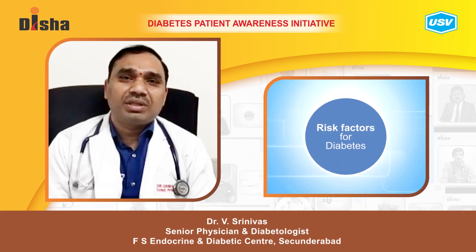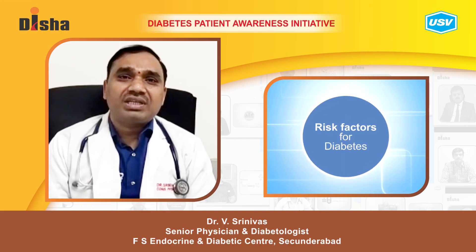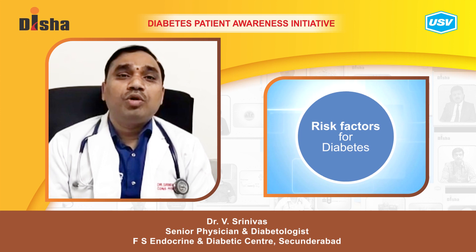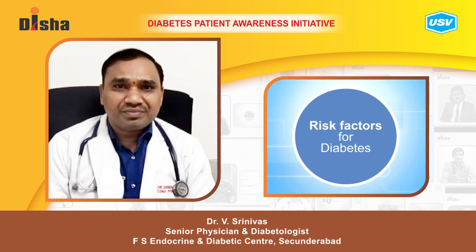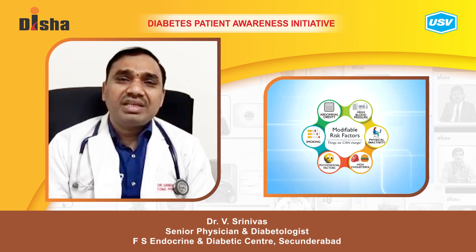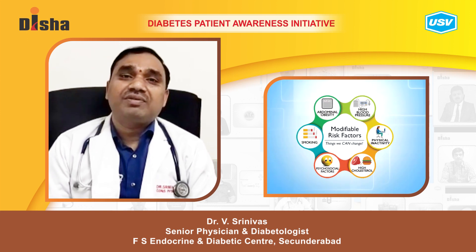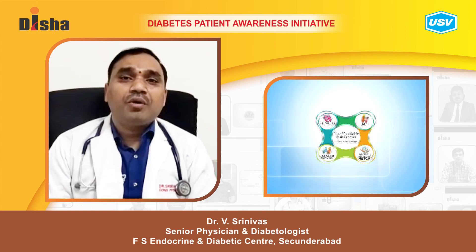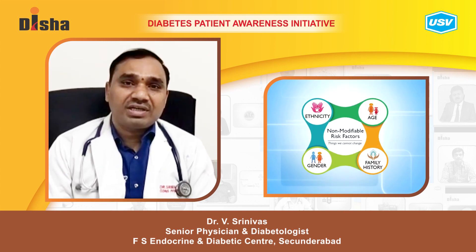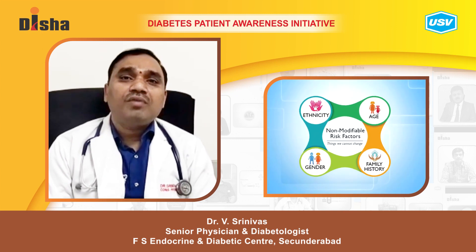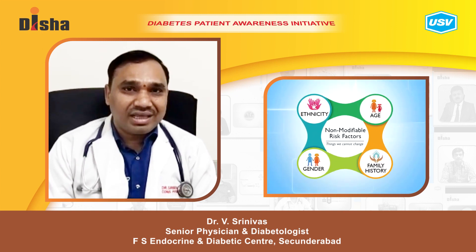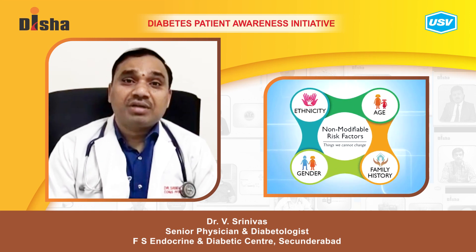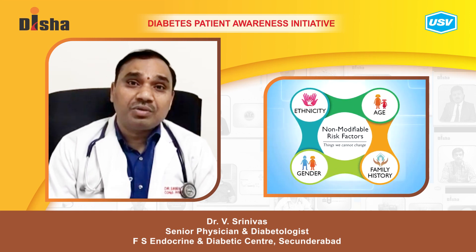Today I will be discussing risk factors for diabetes and the people who are more prone to develop diabetes in the future. There are two types of risk factors: modifiable and non-modifiable. Non-modifiable risk factors include age, sex, and ethnicity, which you cannot control. Modifiable risk factors include lifestyle modifications, dietary modifications, and physical activity.